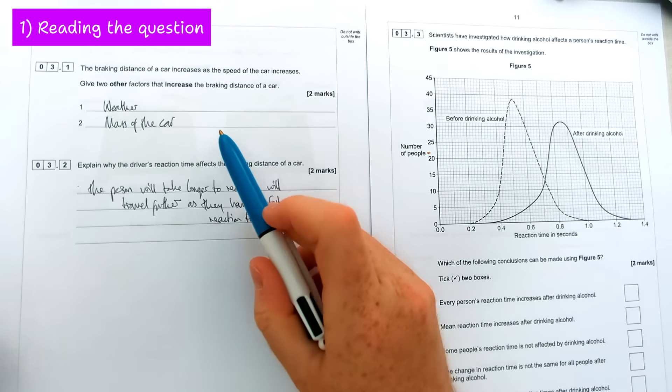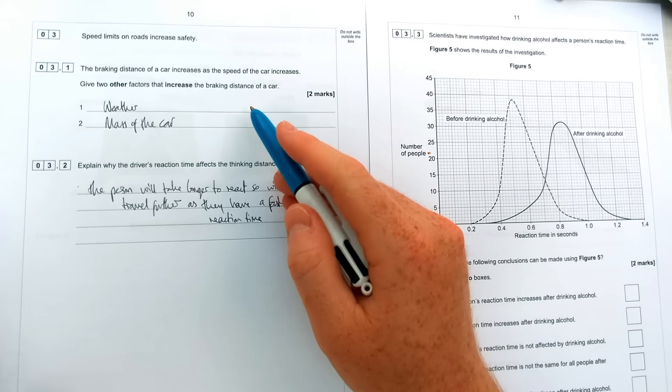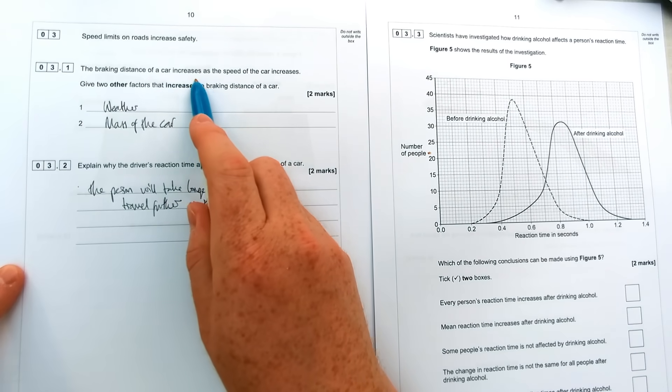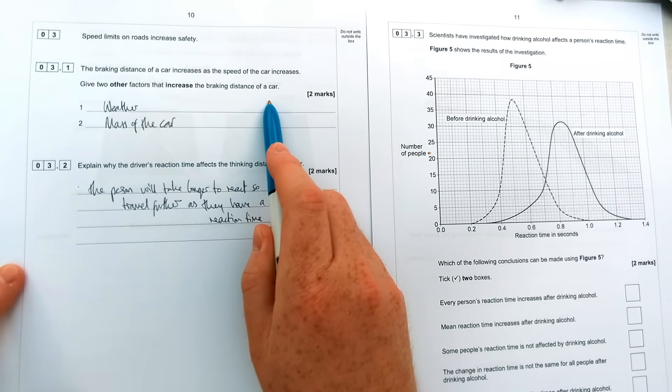The first one we're going to mark is this question here. It seems relatively straightforward and the kind of question people would think 'oh yeah I'll get two out of two marks on this quite easily.' The question asks how the braking distance of a car increases as the speed increases. It says give two other factors that increase the braking distance of the car.